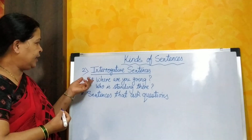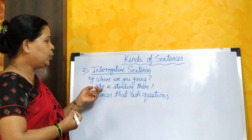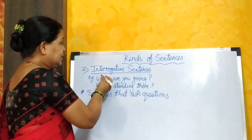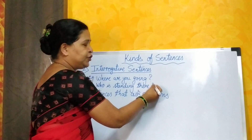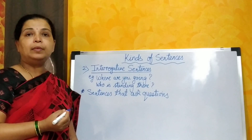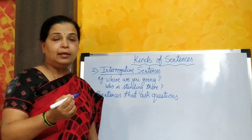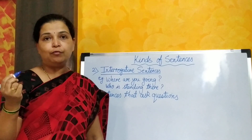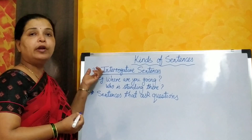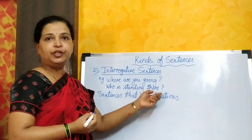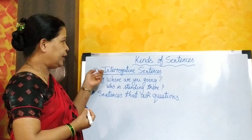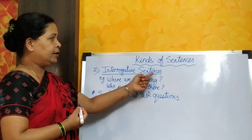In the above sentences we have seen 'where are you going' and 'who is standing there.' Secondly, these sentences end in a question mark. Assertive sentences, as we saw in the last video, end in a full stop. Whereas interrogative sentences always end in a question mark.